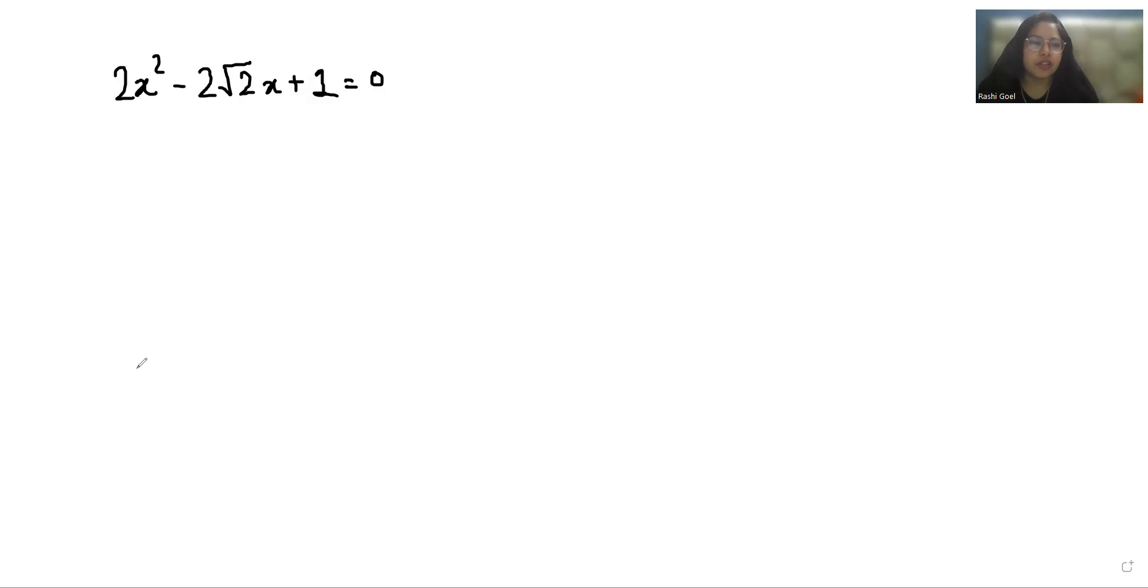So let's start with today's video solution. I'm going to solve this by quadratic formula that is x = (-b ± √(b² - 4ac)) / 2a where a is coefficient of x², b is coefficient of x, and c is the constant.